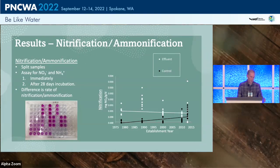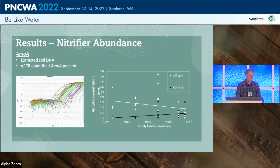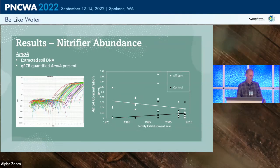We see an interesting response in controls — lower nitrification in older facilities and higher in younger ones. Regardless, there is a clear separation between control and treated facilities at the older sites but not at younger ones — nitrification is increasing at these facilities. Using a qPCR assay for amoA gene abundance, there is a strong relationship between facility age and amoA gene concentration, especially relative to controls.